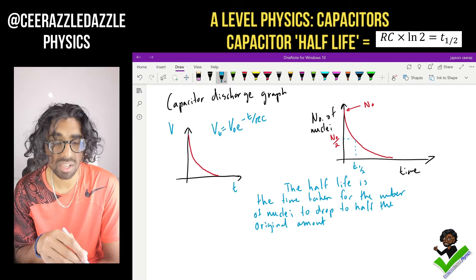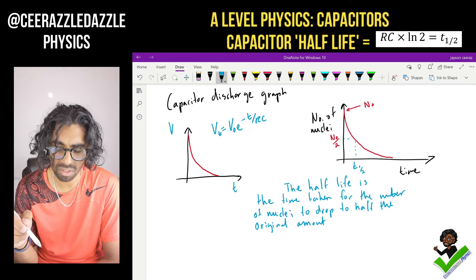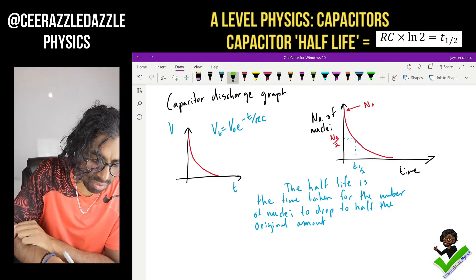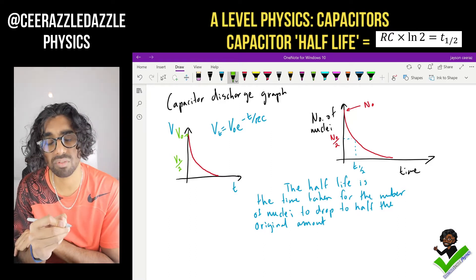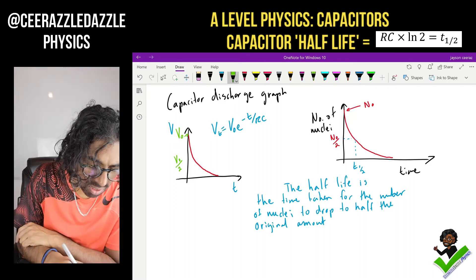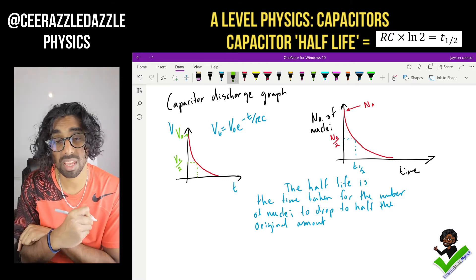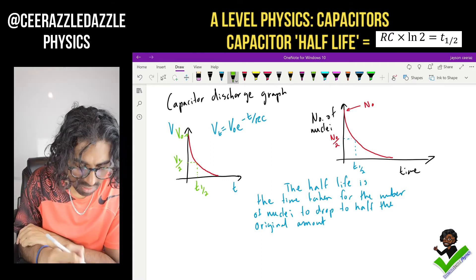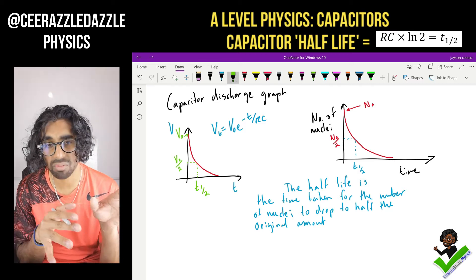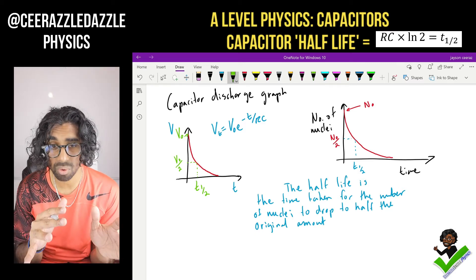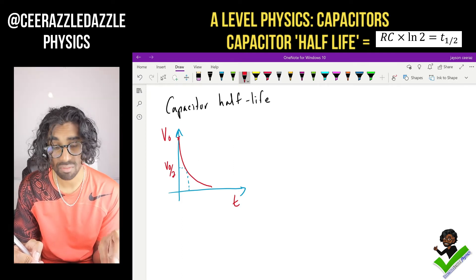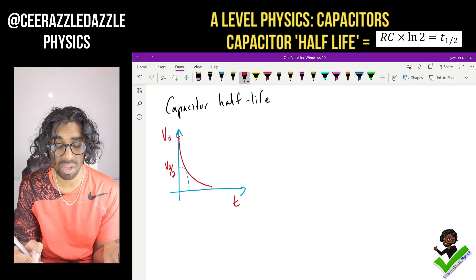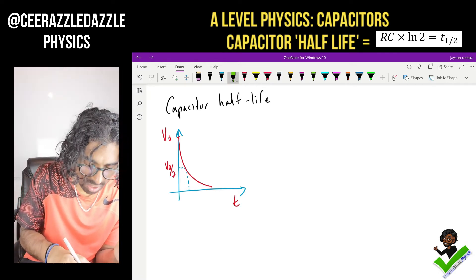We are going to use this now in the capacitor case. So let's look at the half-life for the capacitor and label it on here. The initial voltage is V naught. The half-life will give us V naught over 2 — the time taken for the voltage to reach half the initial amount. So this is the half-life for my capacitor.